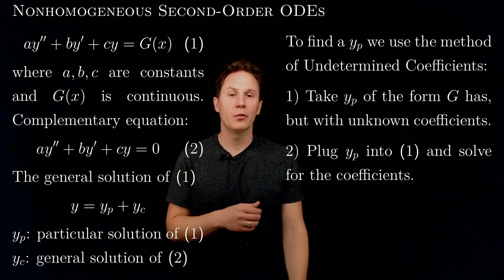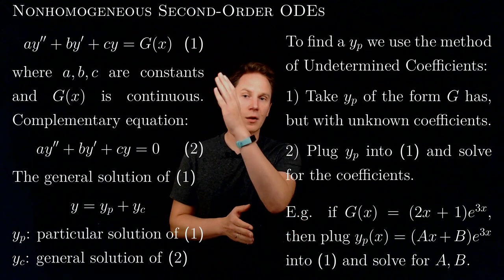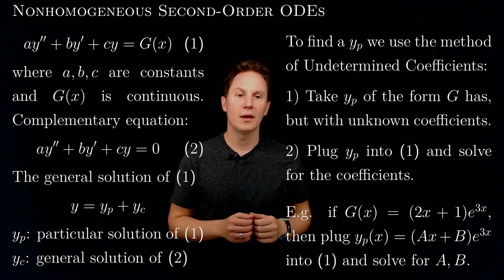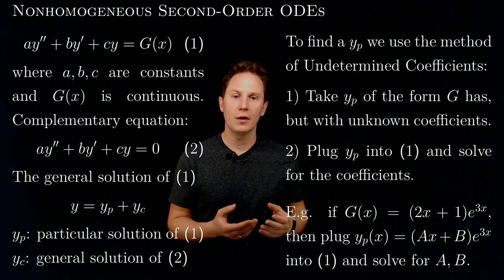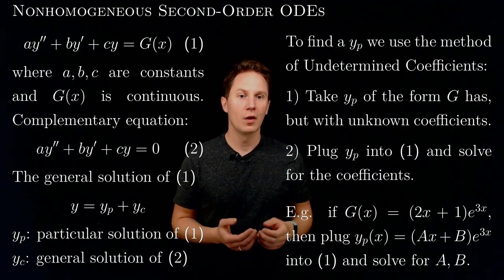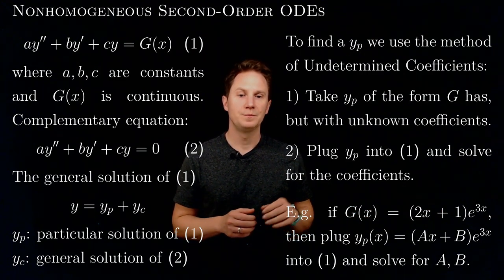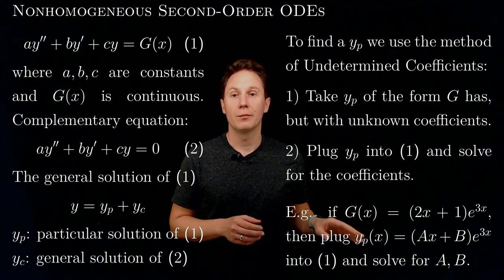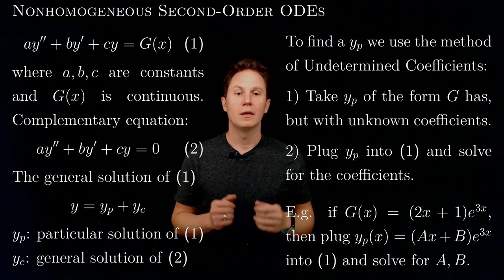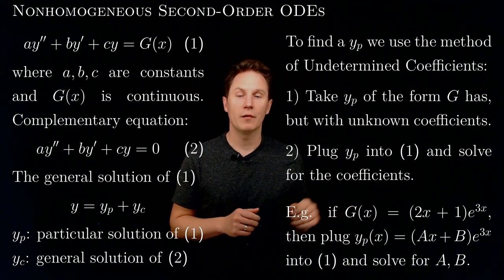Let's see some examples of what these trial solutions should look like. If the right-hand side g of x is of the form 2x plus 1 multiplied by e to the 3x, then our trial solution y sub p is of the form ax plus b multiplied by e to the 3x, where A and B are the unknown undetermined coefficients. Once we plug this trial solution into the non-homogeneous equation, we get relations for A and B that we can solve to find a particular solution.